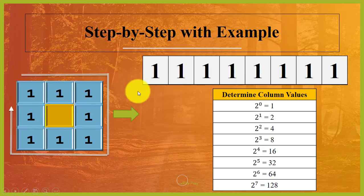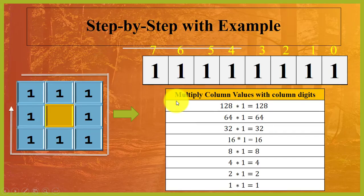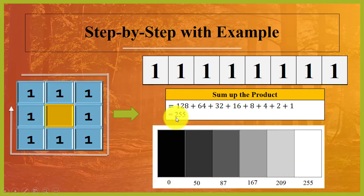Now we will convert this binary number into a decimal number. This is a simple conversion — first we note the column values, then we multiply the column values by the corresponding binary digits. Here we get 255, and the color for 255 is white.